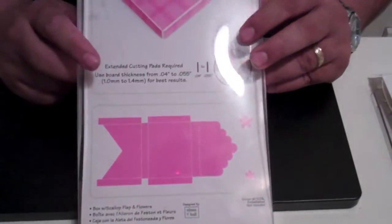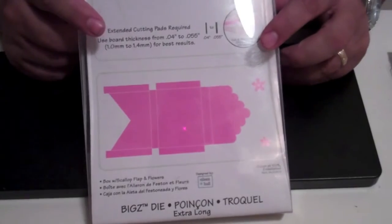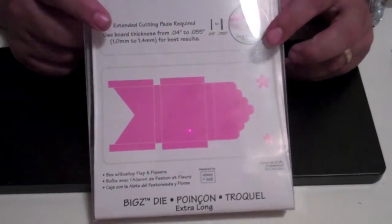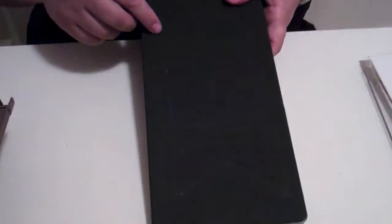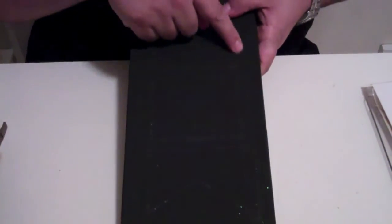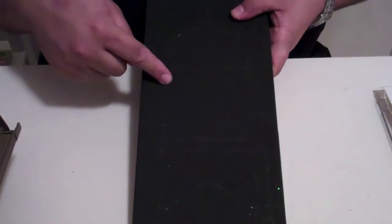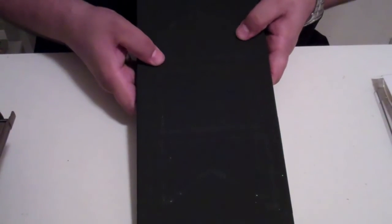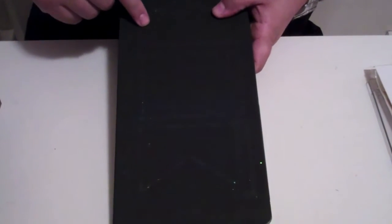Now with this project, this is what it looks like. It does cut out two flowers, I am not using the flowers for this project. But let me show you what the mat, what the scoring thing looks like. Now you can kind of see the design right here. It's a little bit hard to see.